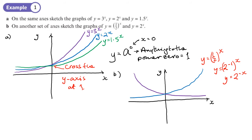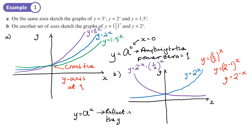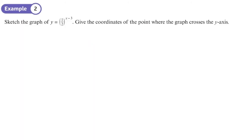The two graphs are mirror images of each other. This one is y equals 2 to the power negative x, which is the same as y equals one-half to the power x, and its mirror image is y equals 2 to the power x — a reflection in the y-axis. In general, if you draw y equals a to the x and reflect in the y-axis, you get y equals a to the negative x.